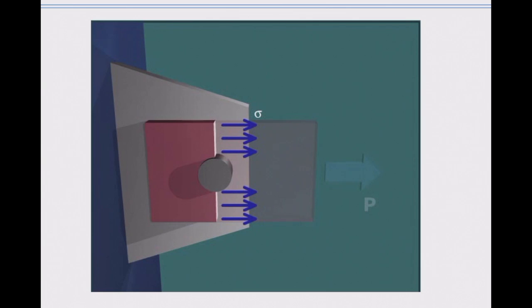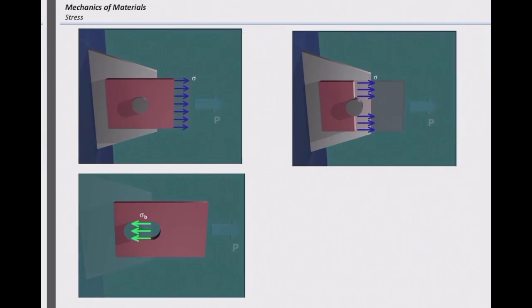So this section is more critical. This is what we call the critical section that has higher stress. Does that make sense? Alright, but this is again normal stress.